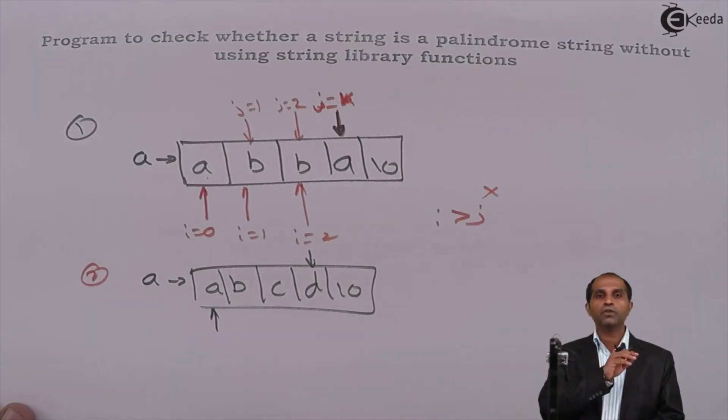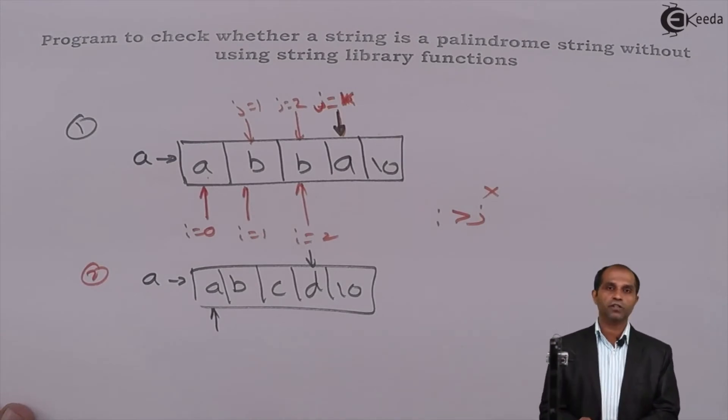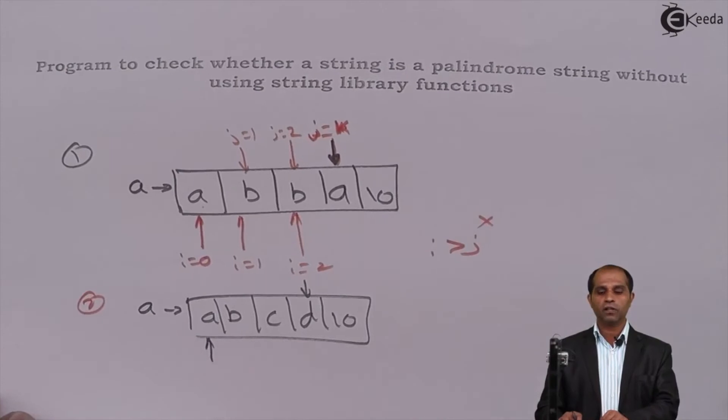In respect to where in the program you should stop this particular operation and you should say that the strings are not palindrome, hence what are the two things? I will be using a break instruction in this particular part. Let's put a program to illustrate this particular part.